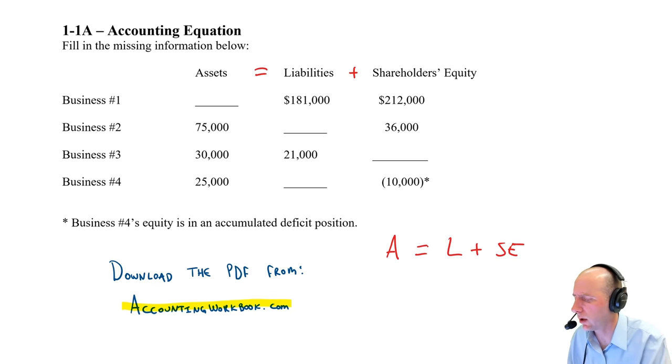So let's start with business one. We don't know the assets. We know the liabilities are 181. We know the equity is 212. So 181 plus 212, doing the math here, that looks like $393,000. And there we have it. We've solved part one.